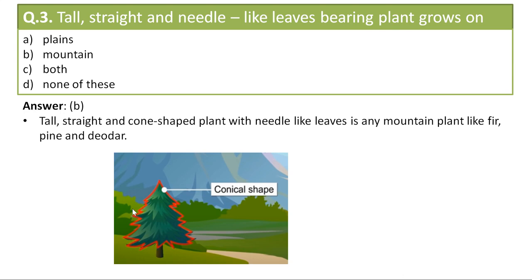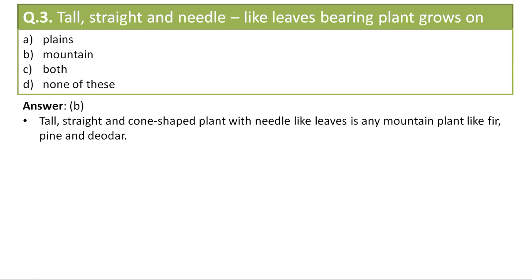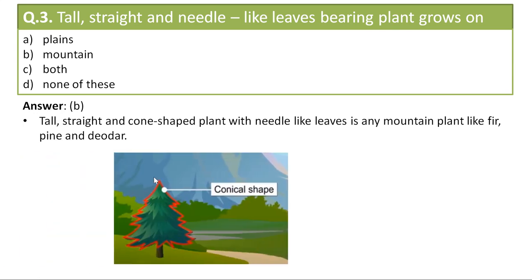You can see here this is an image of a pine tree and it is conical in shape and it is tall and straight as well. Because in case of any snow on mountains, the snow falls on the top and can quickly slide down. Whereas if there was no conical shape, the snow would have rested on the leaves of the tree.